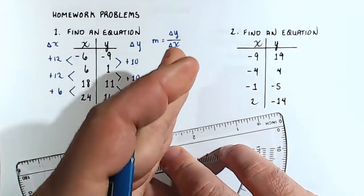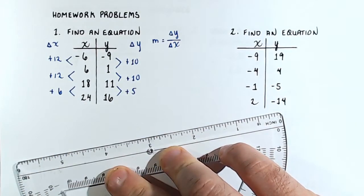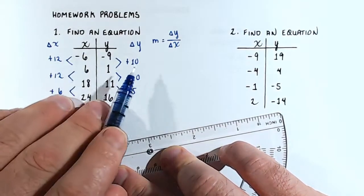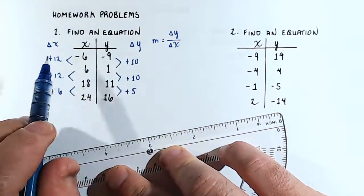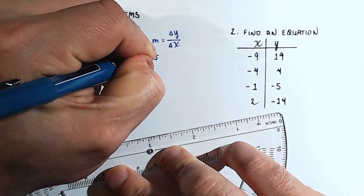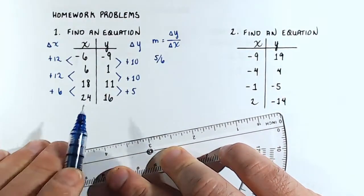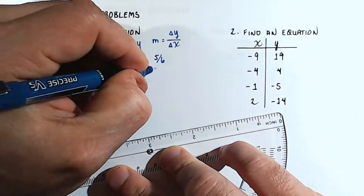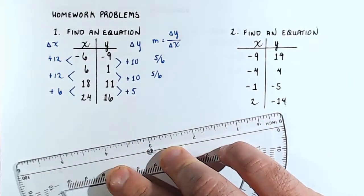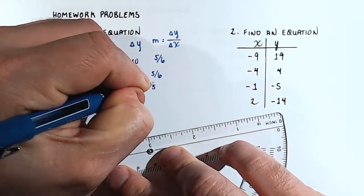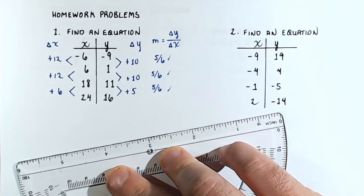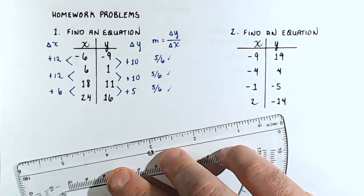We want these ratios to be the same, otherwise we don't have a linear equation. So 10 over 12 can be reduced to 5 over 6. Here, 10 over 12 reduces to 5 over 6. And 5 over 6 is irreducibly 5 over 6. These are all the same, so the slope m is 5 over 6.